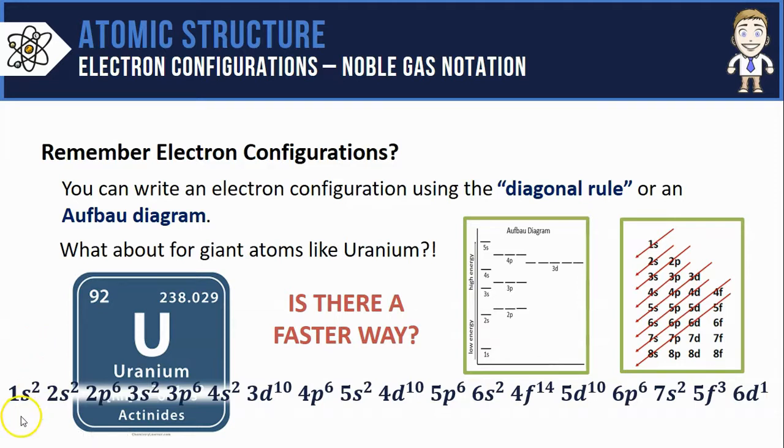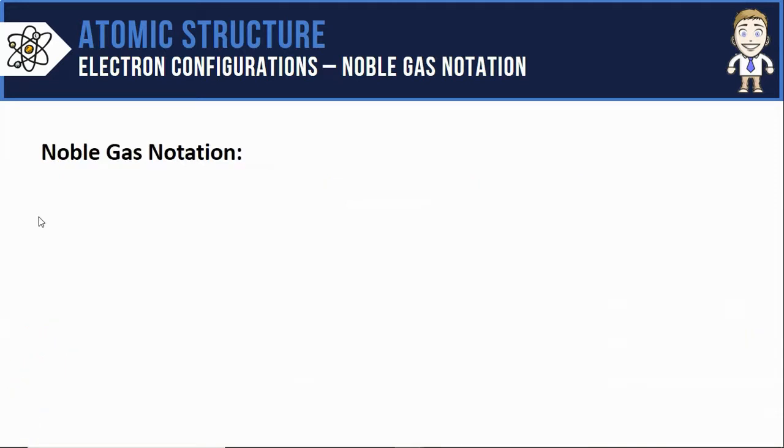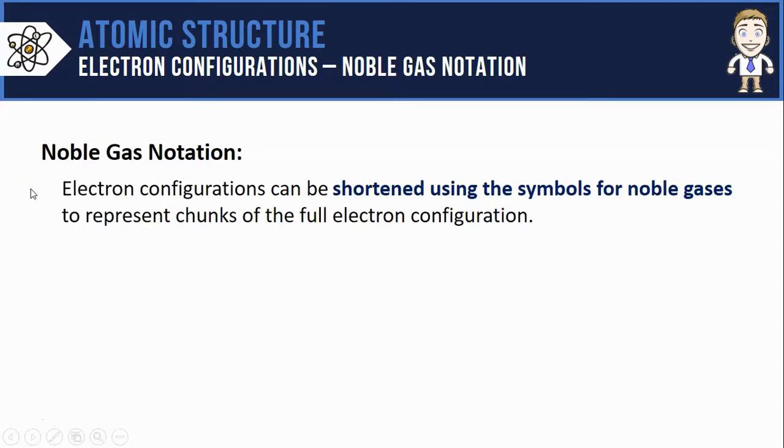Is there a faster way? I'm asking the question because of course there is a faster way. It's called the noble gas notation. It saves you a lot of time. Electron configurations can be shortened using the symbols for noble gases, and those symbols represent chunks of the entire full electron configuration.